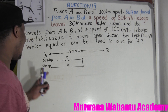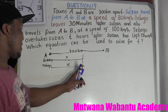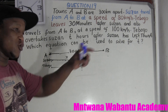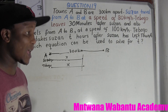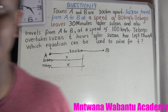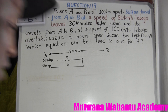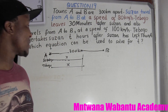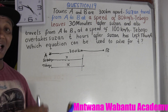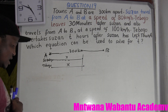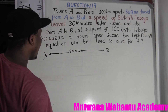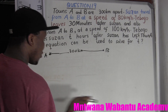When Teboho overtakes Susan, it means they have covered the same distance. Because when they overtake each other — if we leave at the same spot but you go slow and I go fast and I overtake you — right there on the spot where I overtake you, we've covered the same distance. So I'm going to draw a table here to show you the best way of solving this.